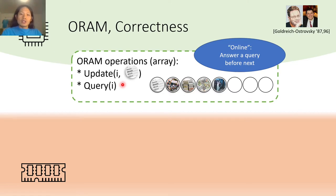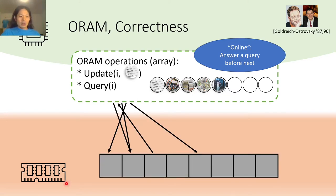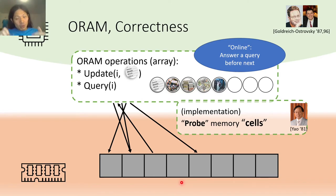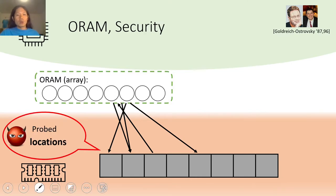Now, the array is just an abstraction. The processor or the client has no space to really store the content of this array, so this array must be stored on the memory or the server side. Historically, we say the memory is an array of memory cells, and reading or writing a memory cell is called probing the memory cell.